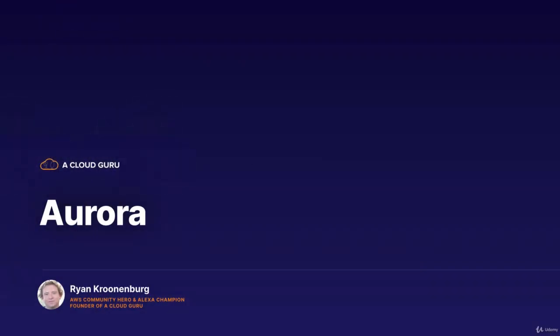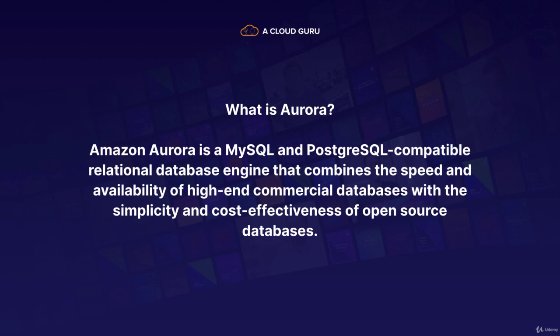Hello cloud gurus and welcome to this lecture. In this lecture we're going to look at Aurora. If you've never heard the term Aurora before, maybe you're new to the AWS space, it is Amazon's own proprietary database. It's been deliberately architected to compete with Oracle and Microsoft's high-end databases while still having the flexibility and open source parameters of things like MySQL and PostgreSQL. It's a MySQL and PostgreSQL compatible relational database engine that combines the speed and availability of high-end commercial databases with the simplicity and cost-effectiveness of open source databases.